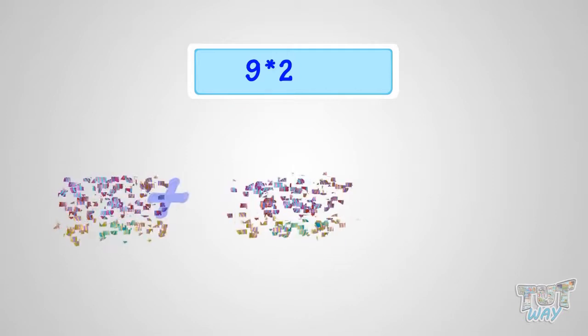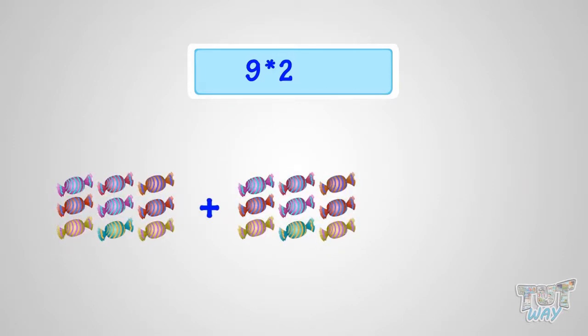What is 9 multiplied with 2? It is same as two sets of 9 candies. So, it is 18 candies. That is, 9 multiplied by 2 is 18.